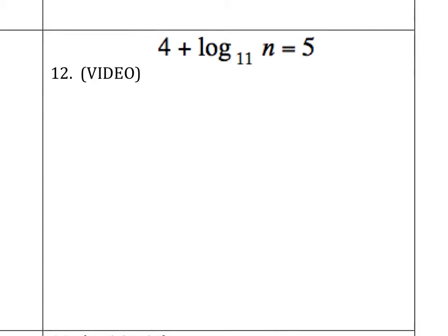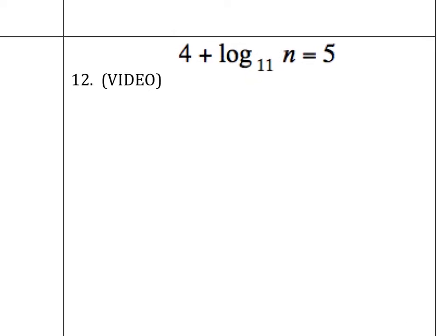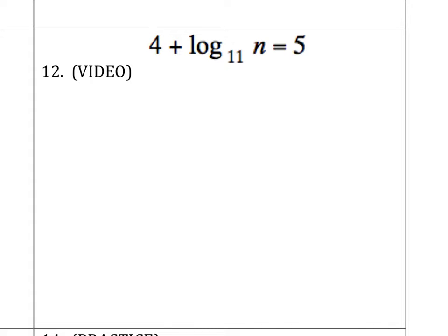Looking at number 12, we've got a log equation. So, what I'm going to do is to try to get the log part by itself first. In other words, I'm going to try to get this log base 11 of n by itself. Minus 4 to both sides. We get log base 11 of n is equal to 1. And I'm going to turn this into an exponential, which means that 11 to the 1 is equal to n. Therefore, n is equal to 11.